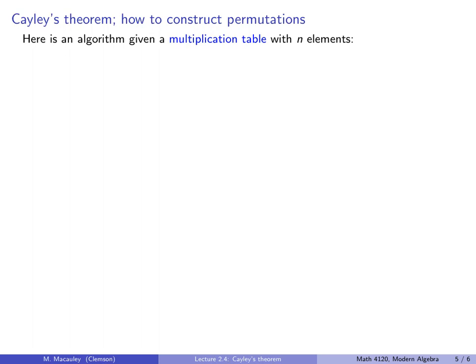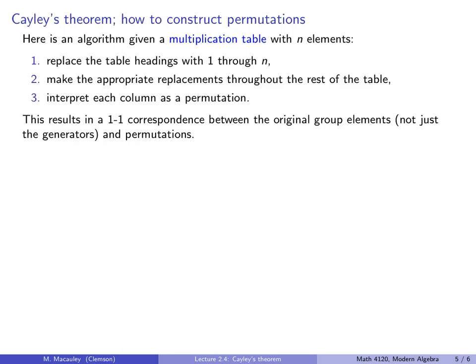Next, here is an algorithm given a multiplication table with n elements. First, replace the table headings, which are normally group elements, with 1 up to n. Might as well make them in increasing order. Next, go through the rest of the table and make the appropriate replacements, replacing elements with the corresponding numbers. And now, interpret each column as a permutation.